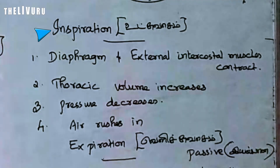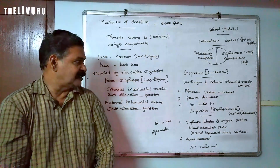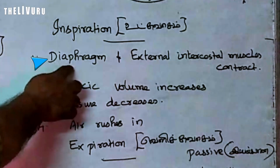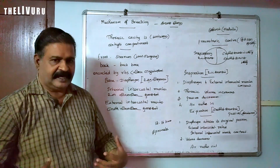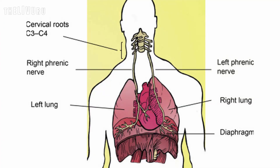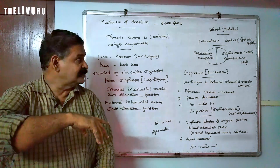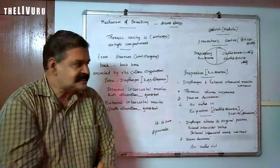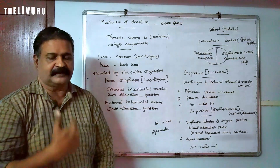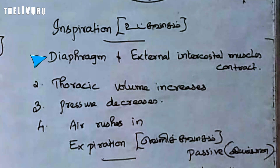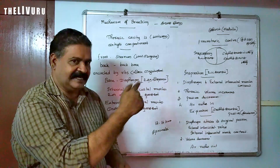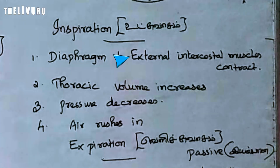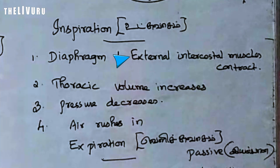The inspiration is controlled by the inspiratory center, which sends signals to the diaphragm and external intercostal muscles. The inspiration involves the diaphragm and external intercostal muscles contracting. When the external intercostal muscles contract during inspiration, two muscles get contracted.